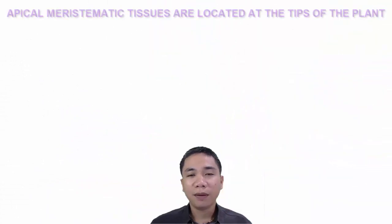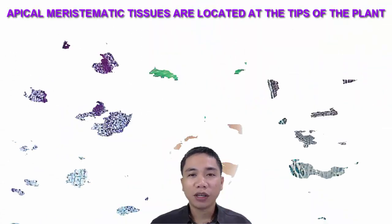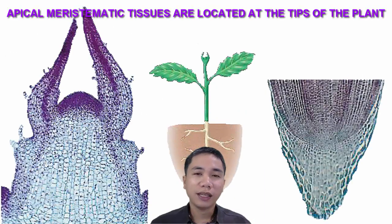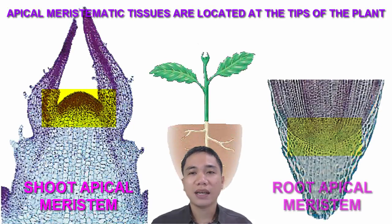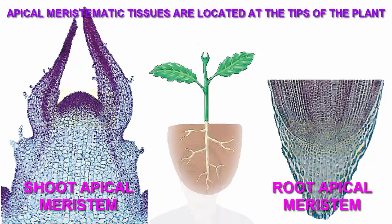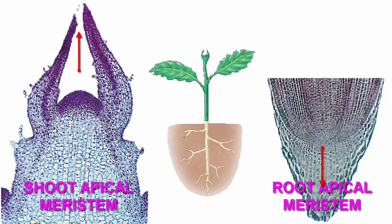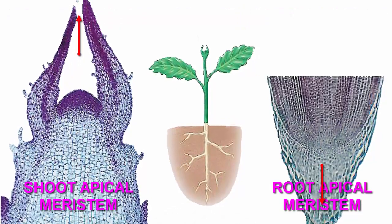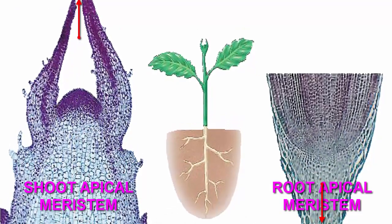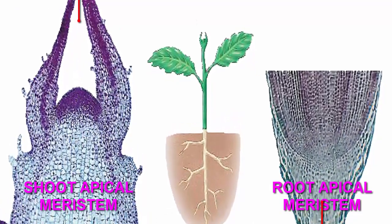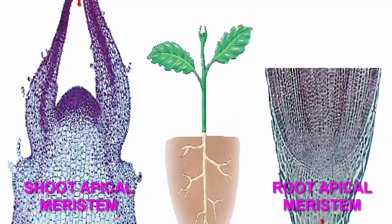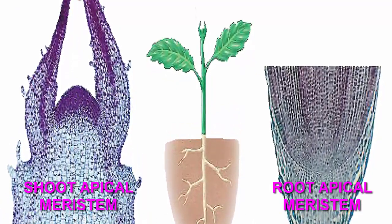Apical meristematic tissues are found at the tips — we have the shoot apical meristem and the root apical meristem. You can visualize a growing plant increasing in length as new cells are being added by these tissues at the tips.